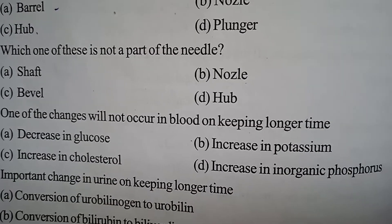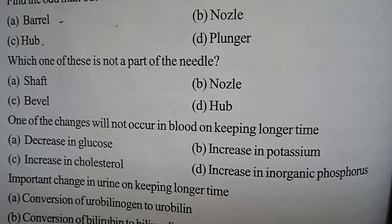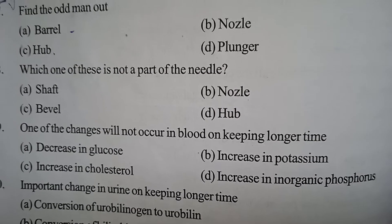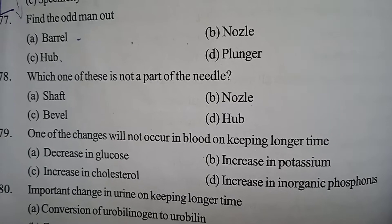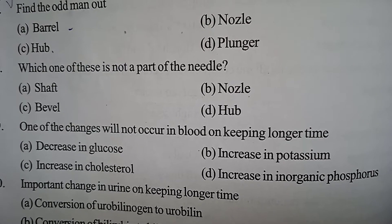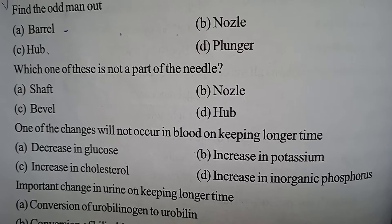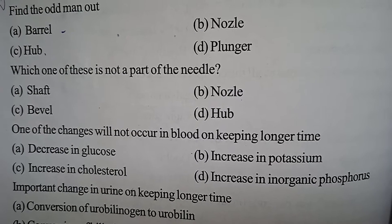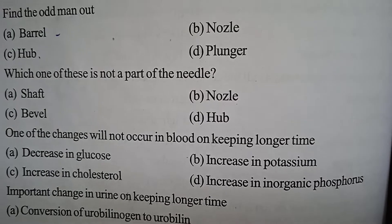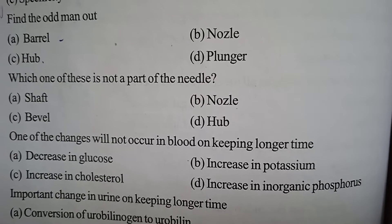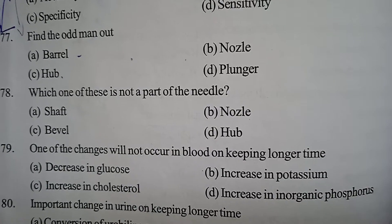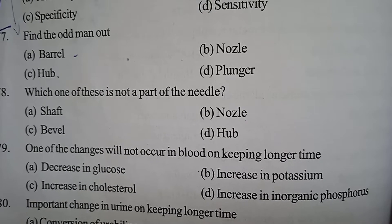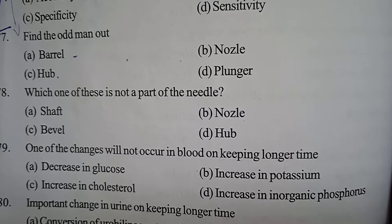Next question: Which one of the following changes will not occur in blood on keeping for a longer time? Option A: decrease in glucose. Option B: increase in potassium. Option C: increase in cholesterol. Option D: increase in inorganic phosphorus. Correct answer: Option C, increase in cholesterol — this does not occur. The others do occur on long-term keeping of blood.